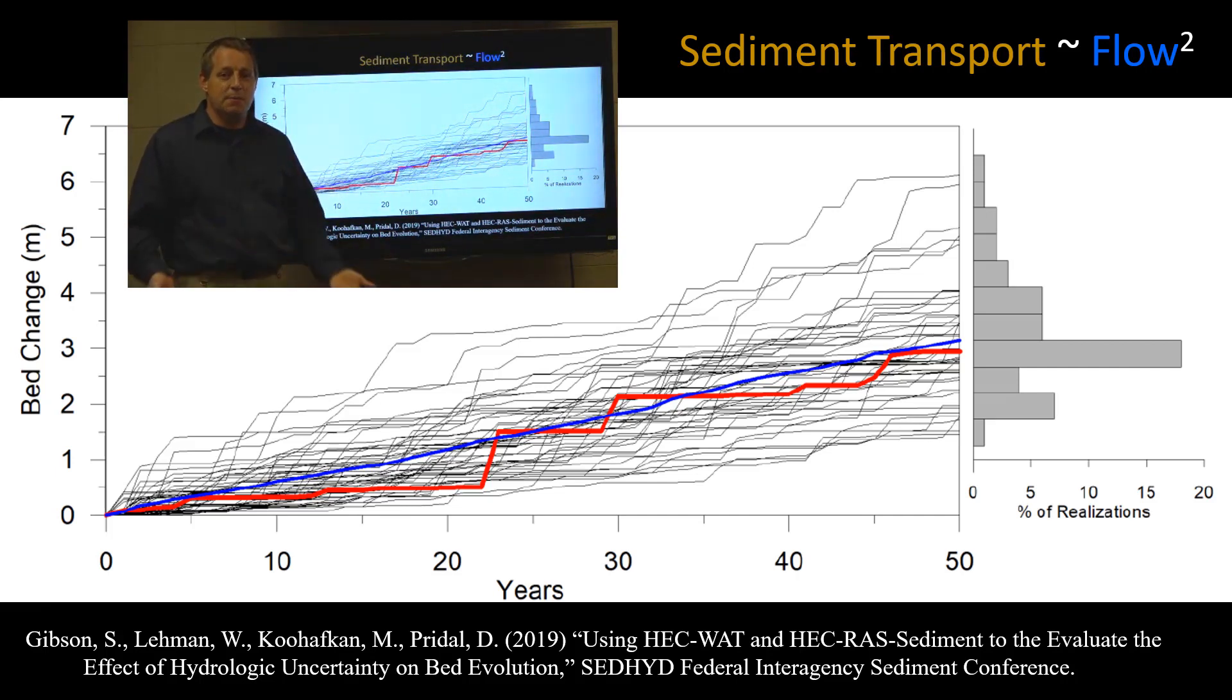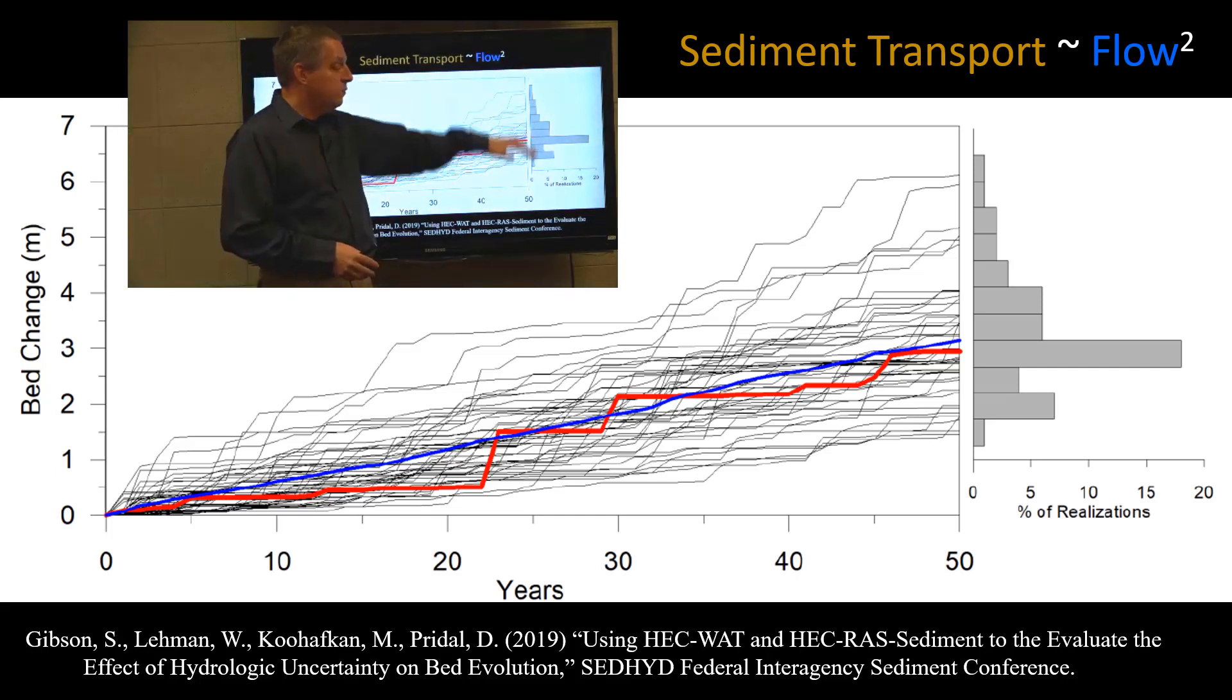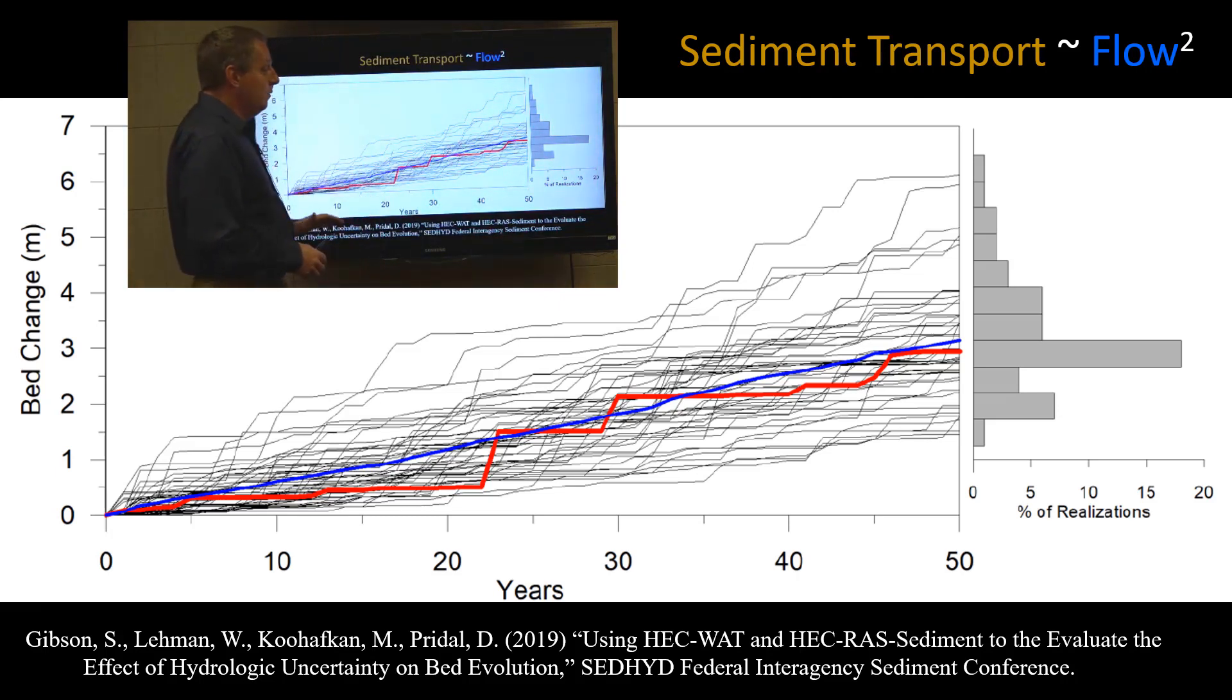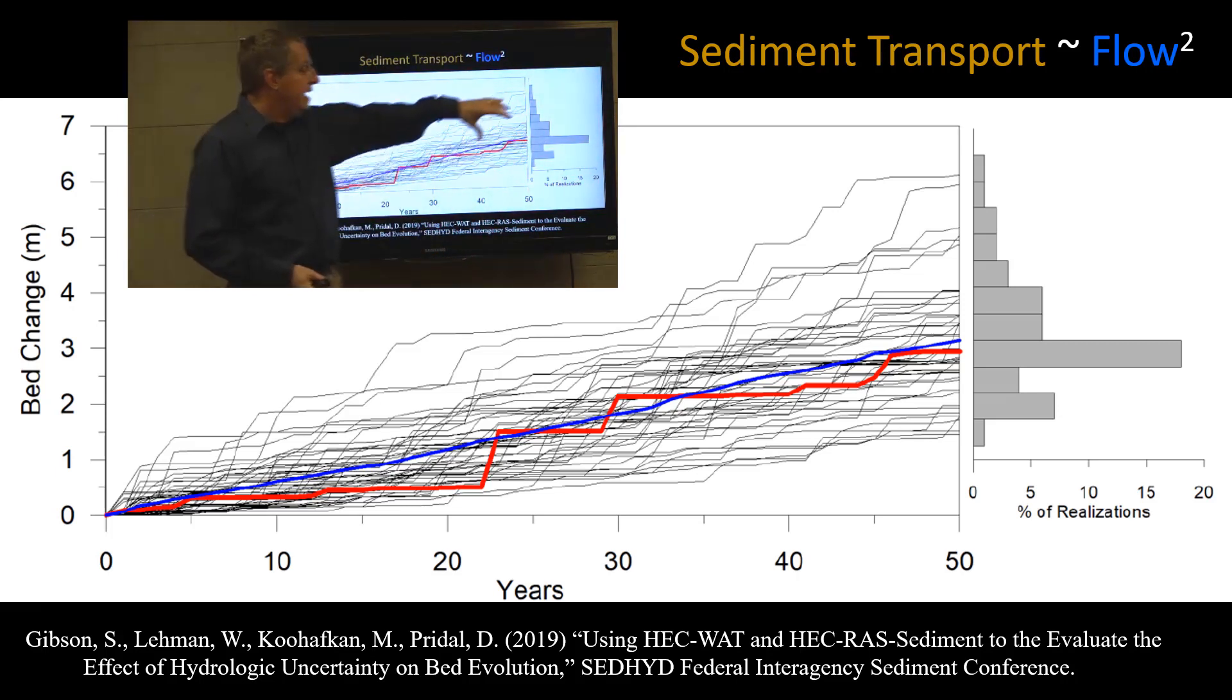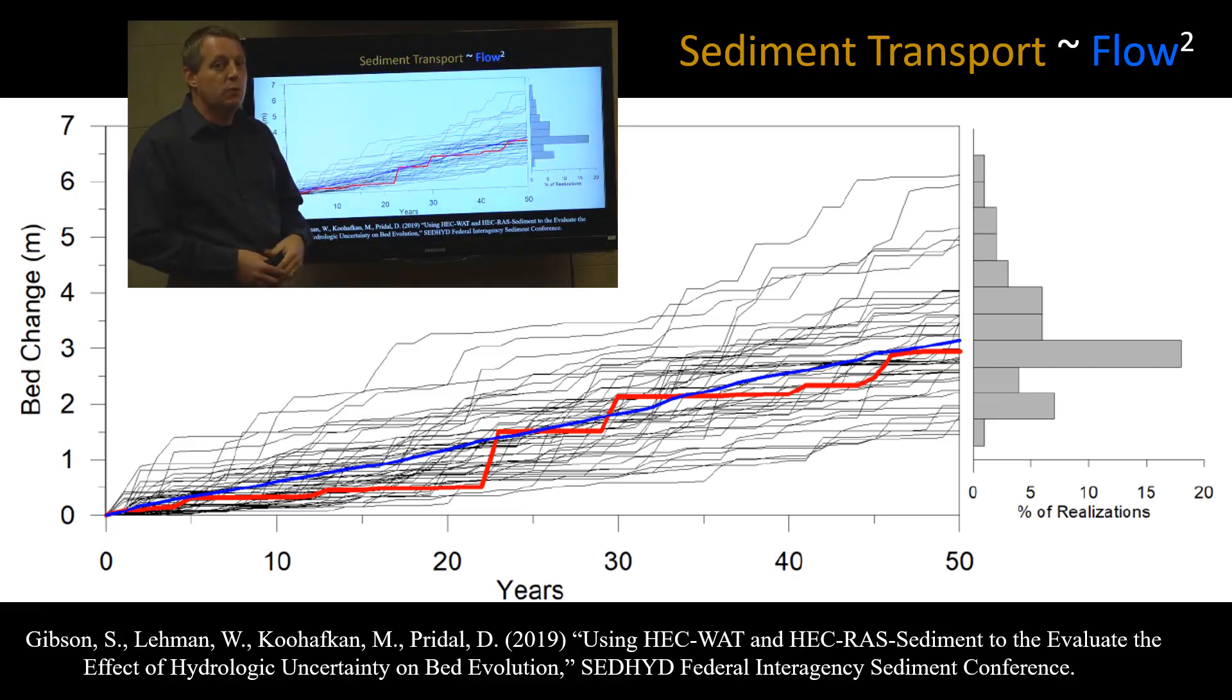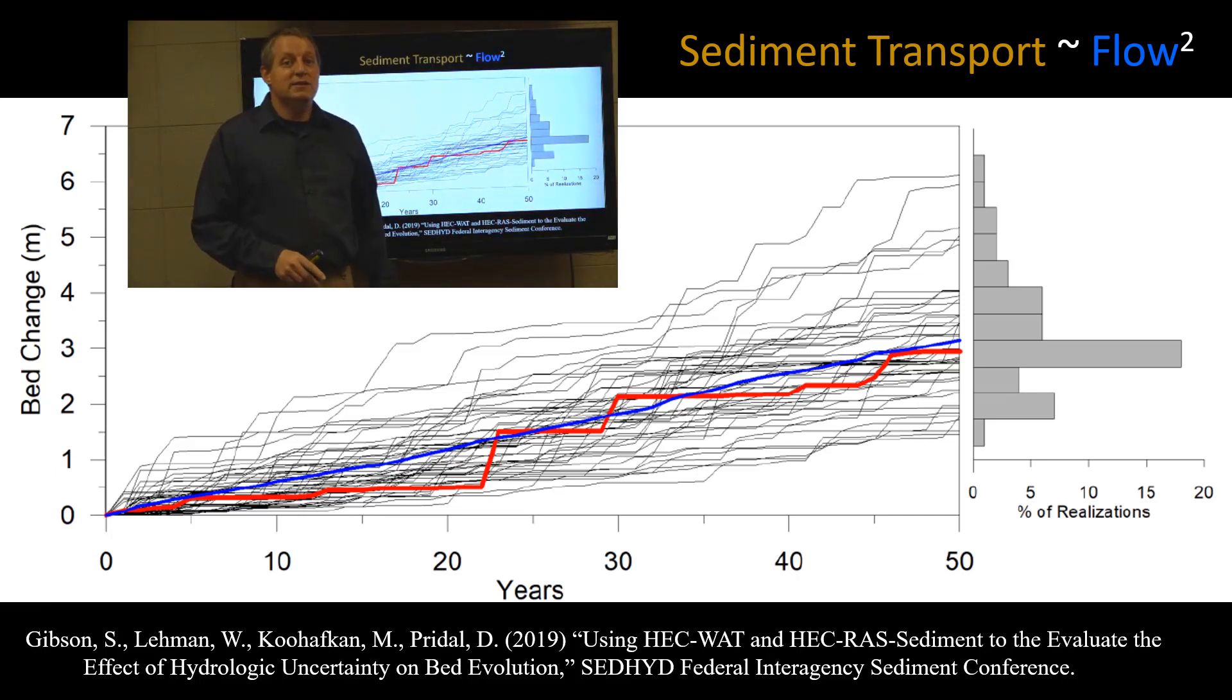But then what I did is I just made that model stochastic. Instead of just running the historic flow series through, I did a standard kind of bootstrap stochastic hydrology and ran 50 realizations and said, hey, what is the final result of these 50 realizations? And what you'll see is that not only is there substantial spread around the deposition, but it's asymmetrical. It has a long, high tail because an asymmetrical uncertainty distribution is just one of the features of a non-linear process.